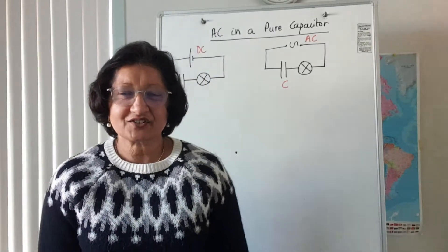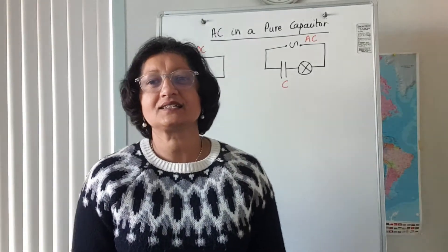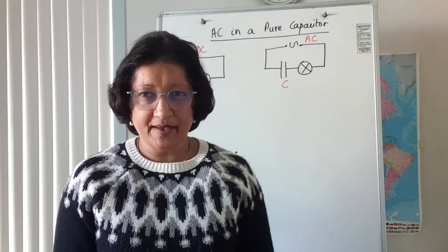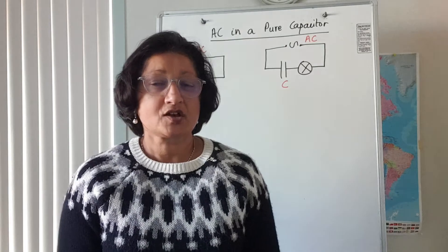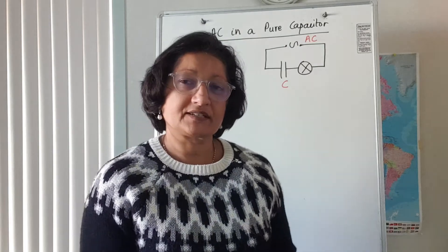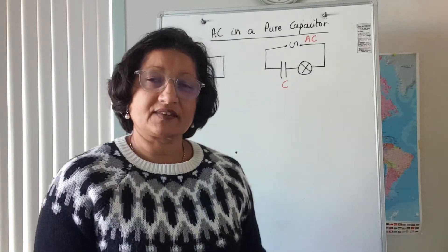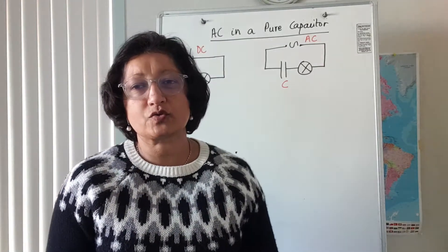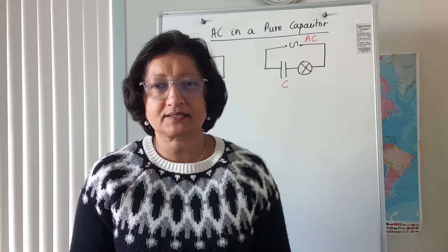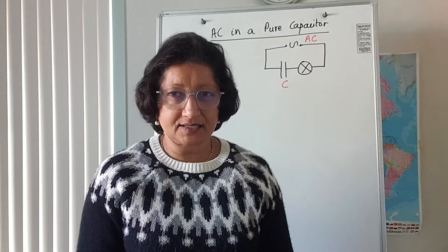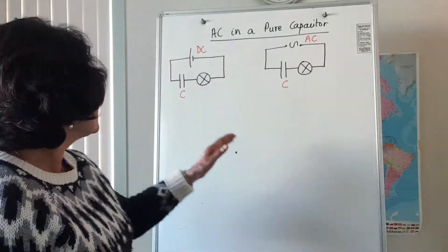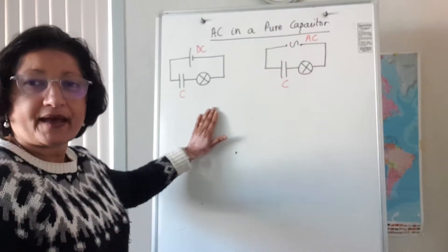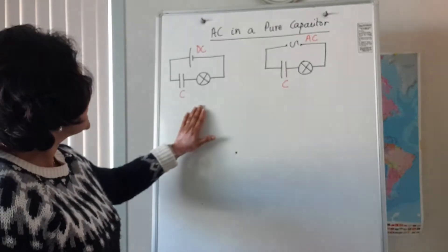Hi everyone. Today's lesson is about AC in a pure capacitor. What happens if there's a capacitor in a DC circuit as opposed to having a capacitor in an AC circuit? This diagram shows a capacitor in a DC circuit.